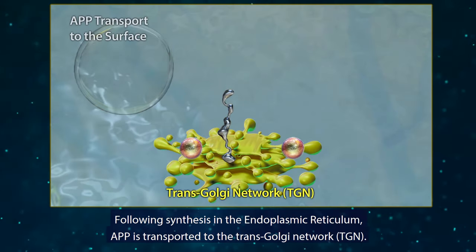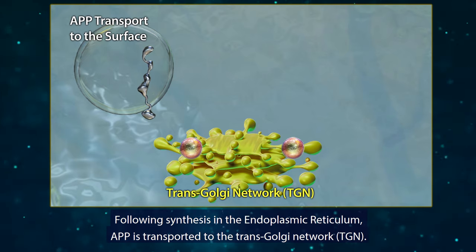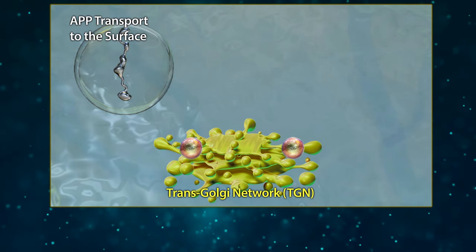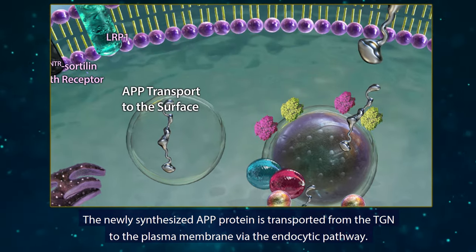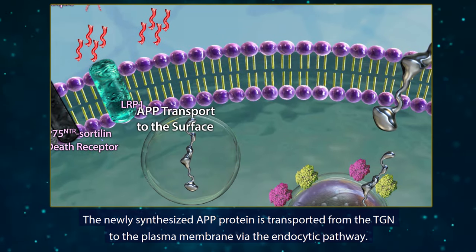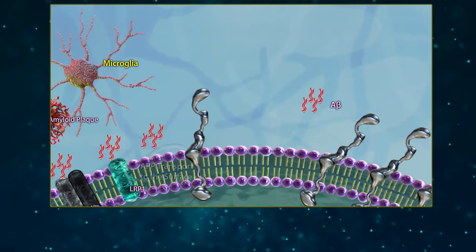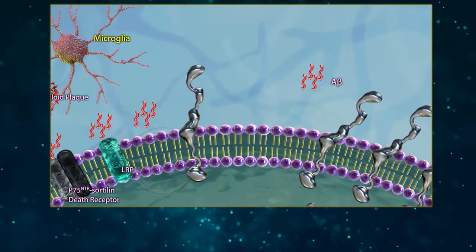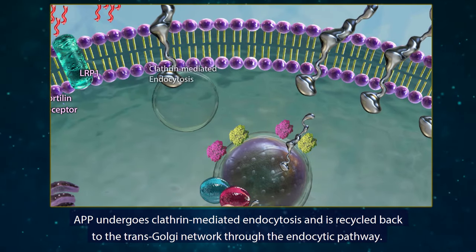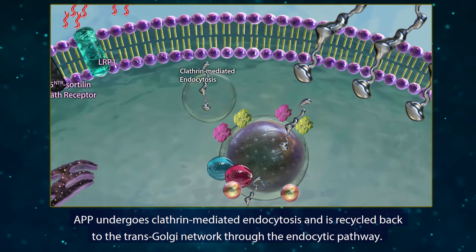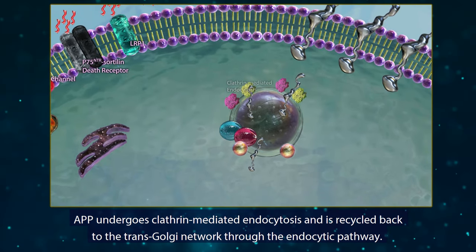Following synthesis in the endoplasmic reticulum, APP is transported to the trans-Golgi network. The newly synthesized APP protein is then transported from the TGN to the plasma membrane via the endocytic pathway. APP subsequently undergoes clathrin-mediated endocytosis and is recycled back to the trans-Golgi network through the endocytic pathway.